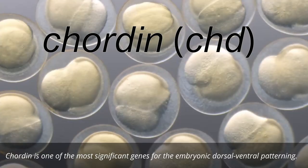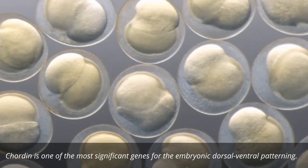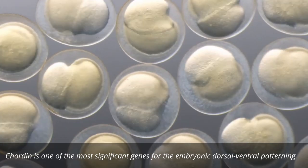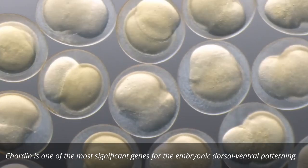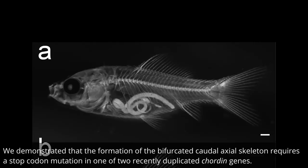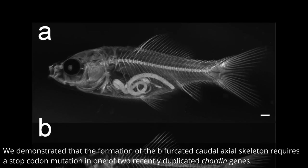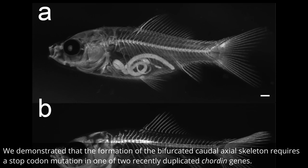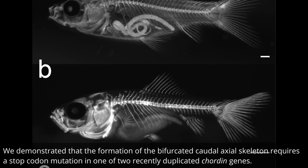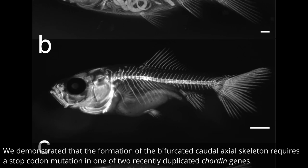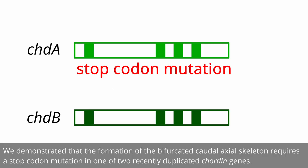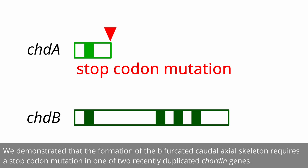Caudin is one of the most significant genes for embryonic dorsal-ventral patterning. We demonstrated that the formation of the bifurcated caudal axial skeleton requires a stop-caudin mutation in one of two recently duplicated caudin genes.